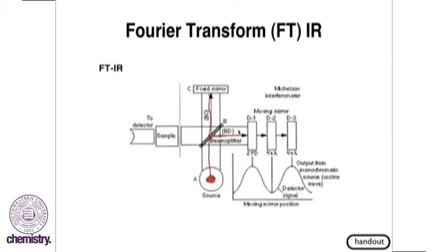Again, half the light passes through the mirror, half the light reflects off the mirror at a 90 degree angle. Here's the interesting part, and this is why we call this a Michelson interferometer.